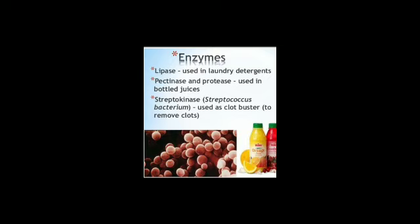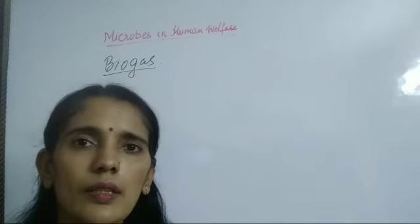Ethanol is produced from yeast, which is used for the commercial production of ethanol. So enzyme production, antibiotics, organic acid production, and amino acids — all these come under industrial production. By this, we can identify different microbes which are useful in industrial production.